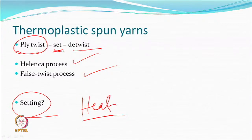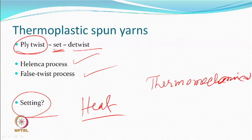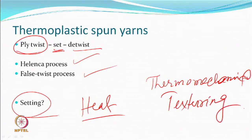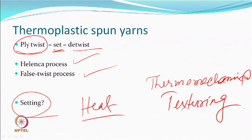One can use and employ these processes — helenka being a batch process and false twist being a continuous process — and setting is done by heat. Therefore, this process should be considered a thermomechanical texturing. As a principle it is the same thing: all those setting-by-release-of-energy principles are involved. Although you will generally have two spun yarns applied together, heat-set, and then de-twisted, you will get similar retraction properties.